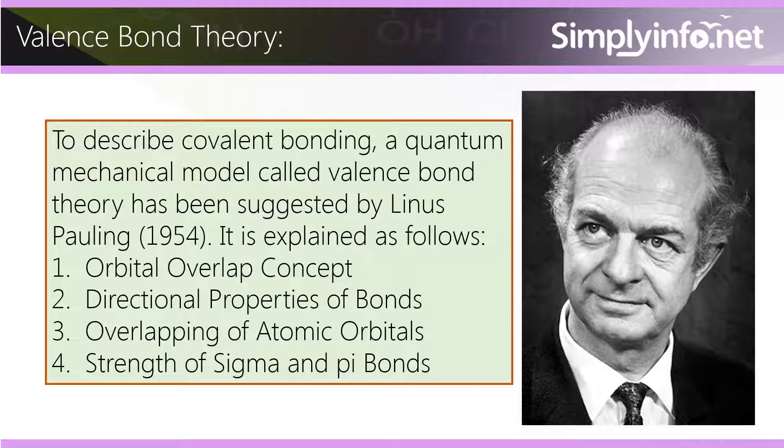It is explained as follows: orbital overlap concept, directional properties of bonds, overlapping of atomic orbitals, and strength of sigma and pi bonds.